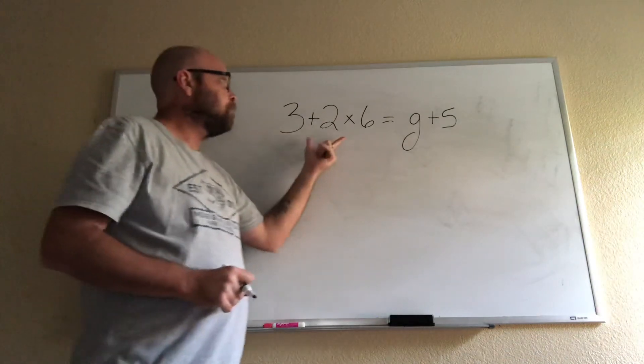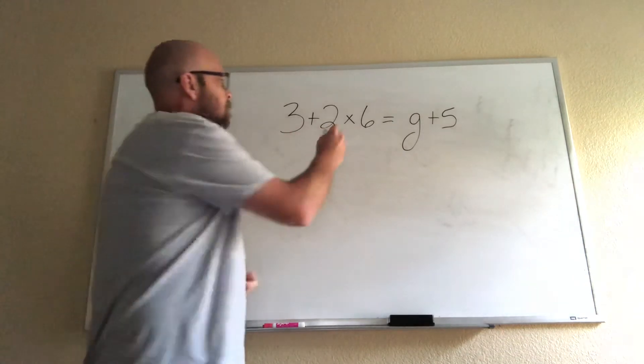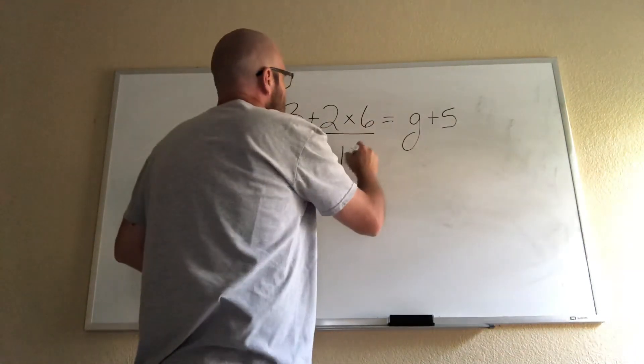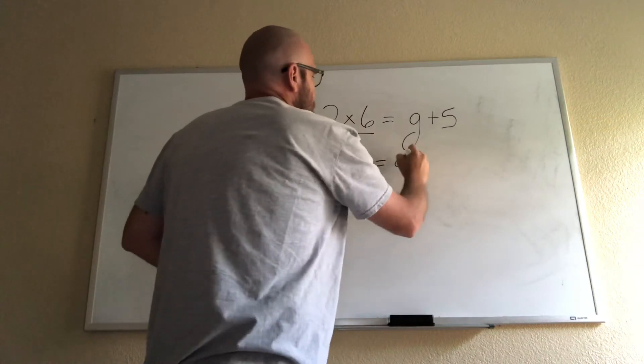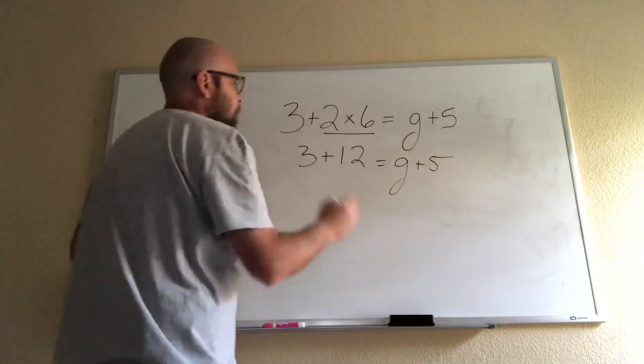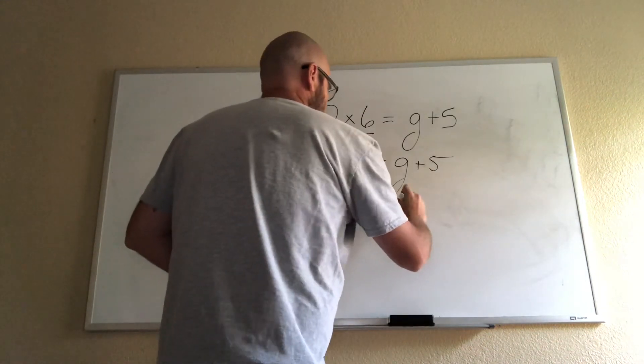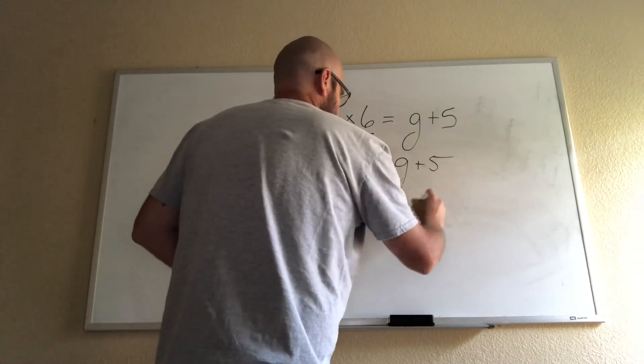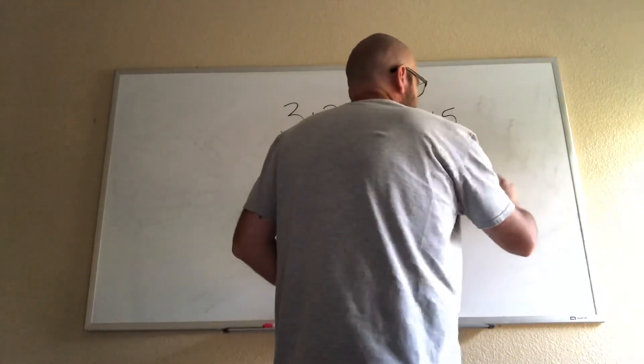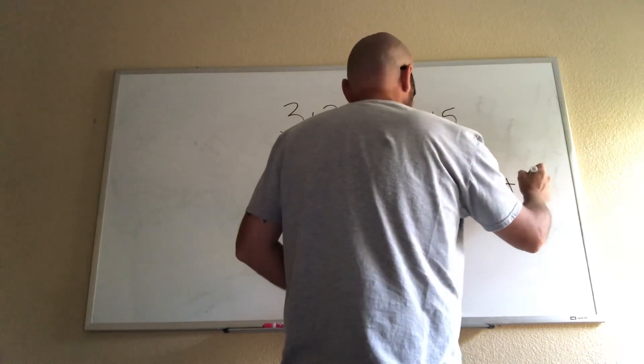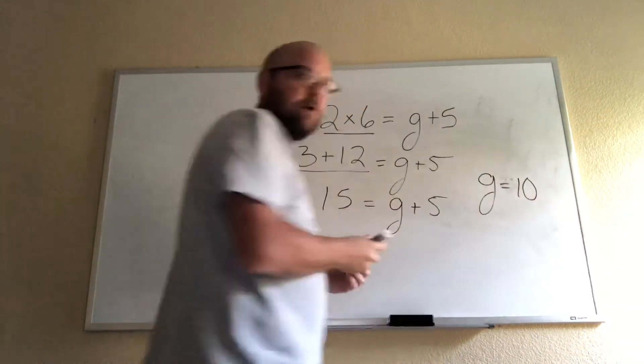When I do multiple operations, my multiplication always comes before my addition, so I'm going to multiply first. So then I have 3 + 12 = G + 5. 3 + 12 is 15. What plus 5 equals 15? Well obviously because you guys are superior math students, G must equal 10.